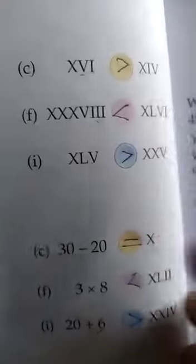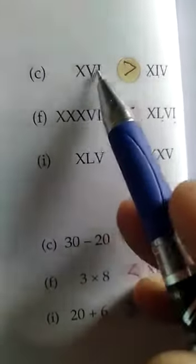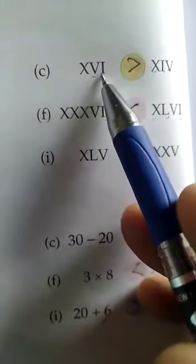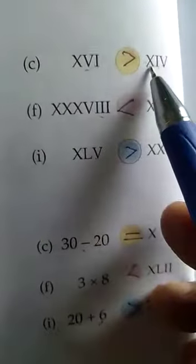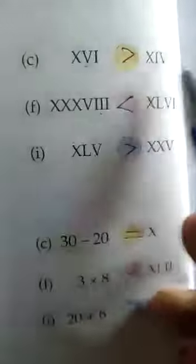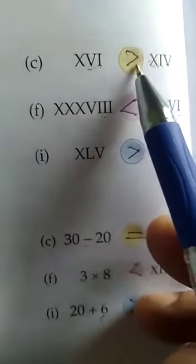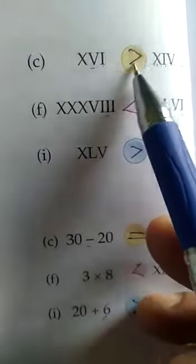Now QC. We will compare XVI and XIV. XVI: 10 plus 5 plus 1 is equal to 16. And XIV: 10 plus 5 minus 1 is 14. So this is 16 and this is 14. We can see that 16 is greater than 14, so this sign will come here.